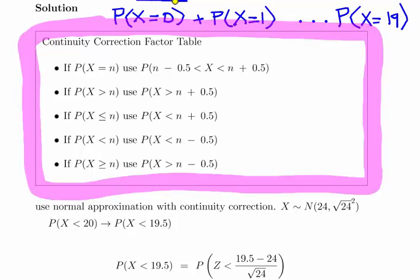Fewer than 20 means less than 20, or less than or equal to 19. So, less than or equal to, what are we going to use here? Less than or equal to 20. We're going to use this one in this instance.